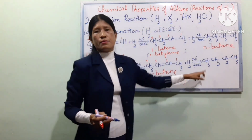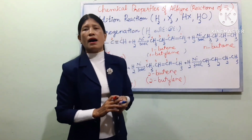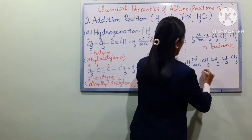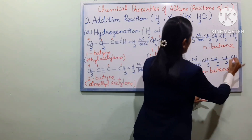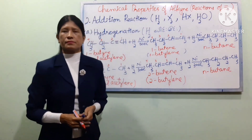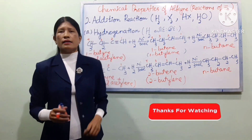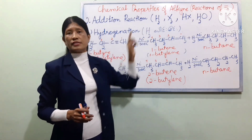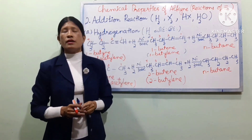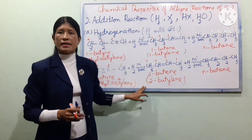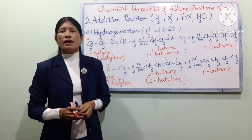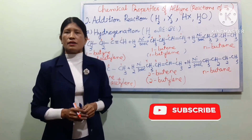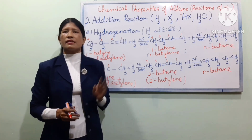If you have any questions, I will answer them. The product of normal butyne hydrogenation is normal butene. We have seen H2-bond hydrogenation and carbon-bond hydrogenation. See you next lesson. Bye!